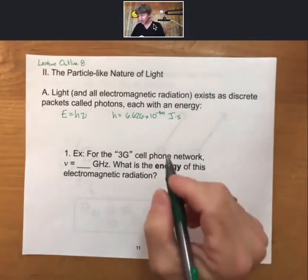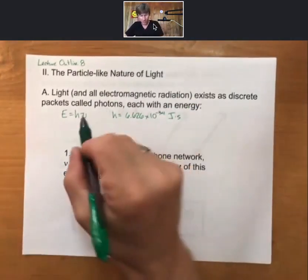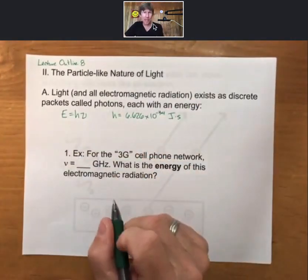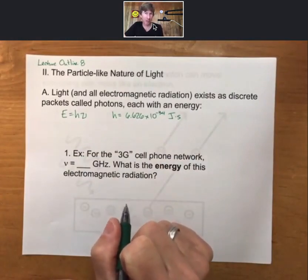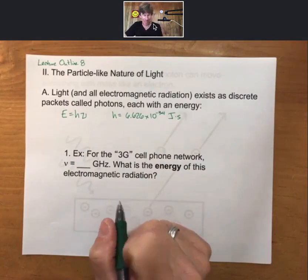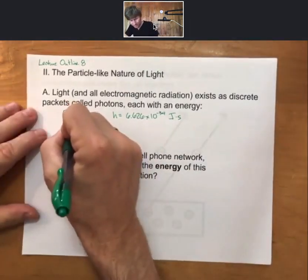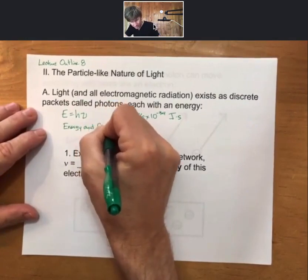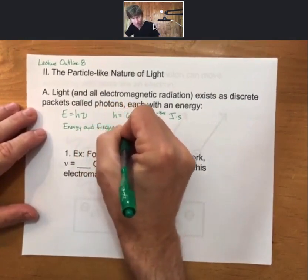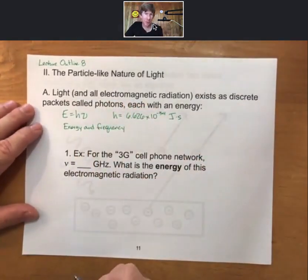And h is 6.626 times 10 to the negative 34th joule seconds. And therefore, from this equation, energy and frequency are directly proportional and related by the constant, Planck's constant h. Energy and frequency are directly proportional.